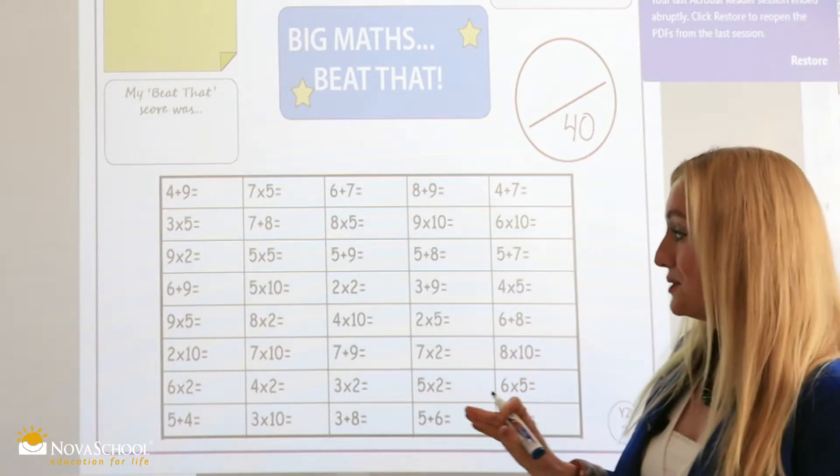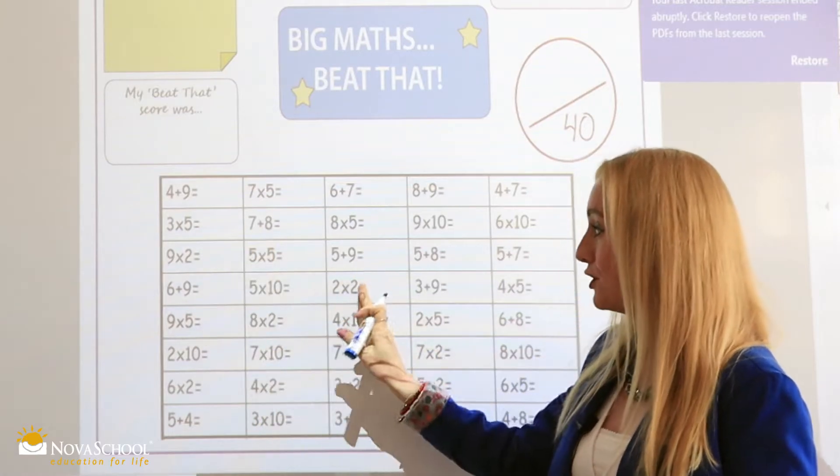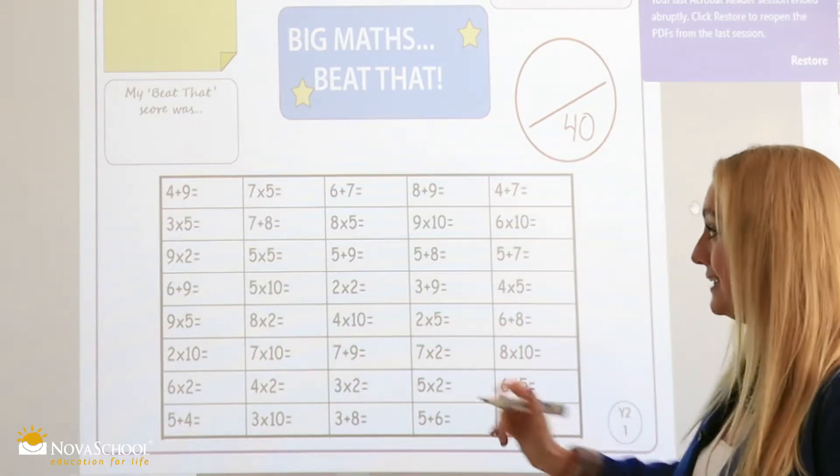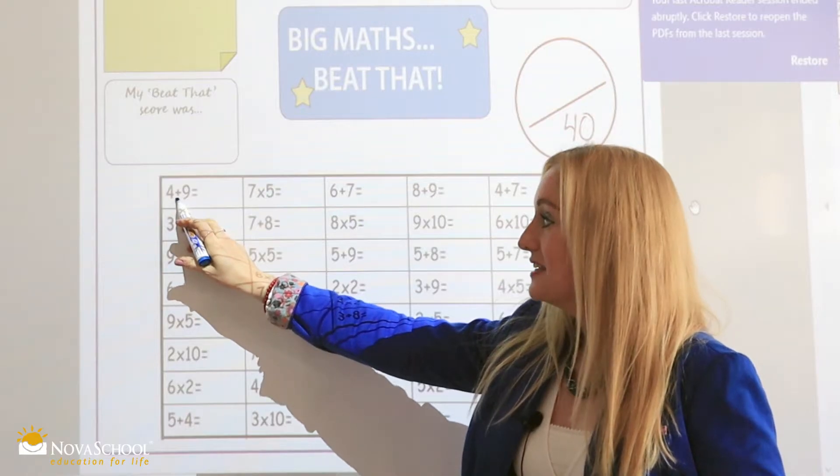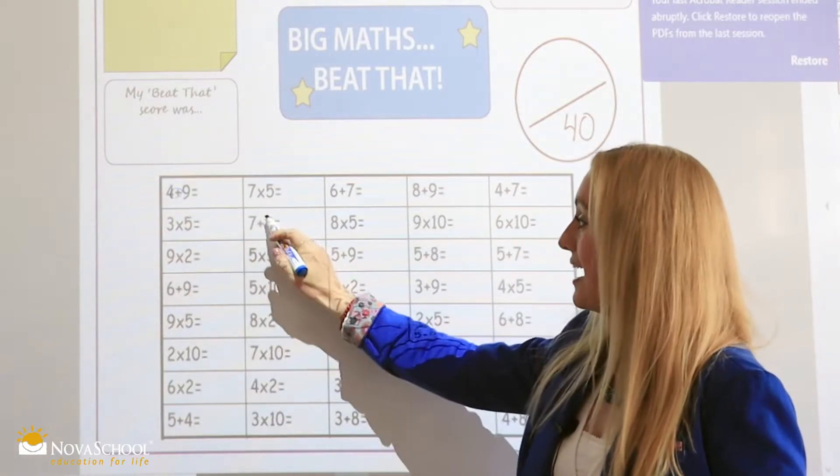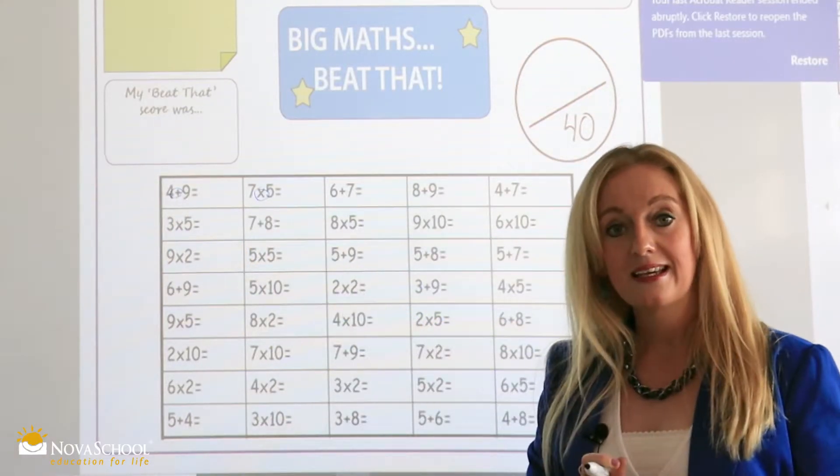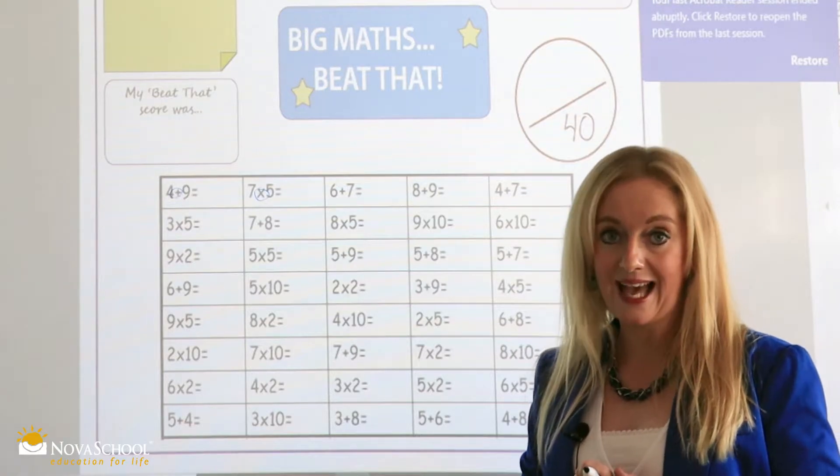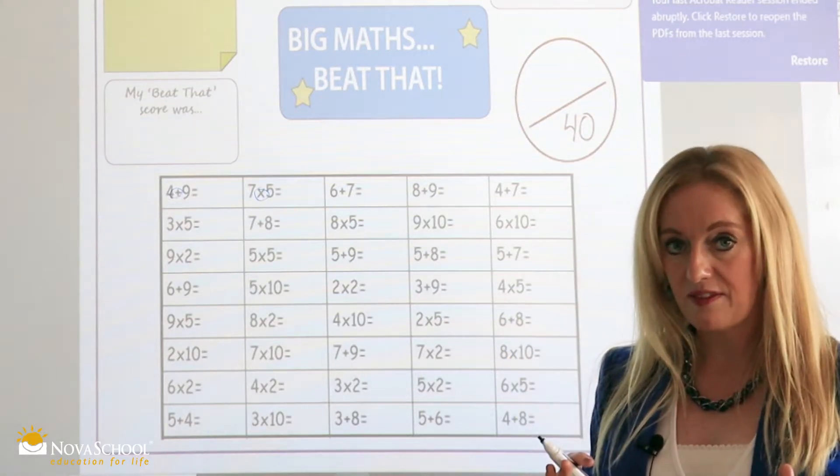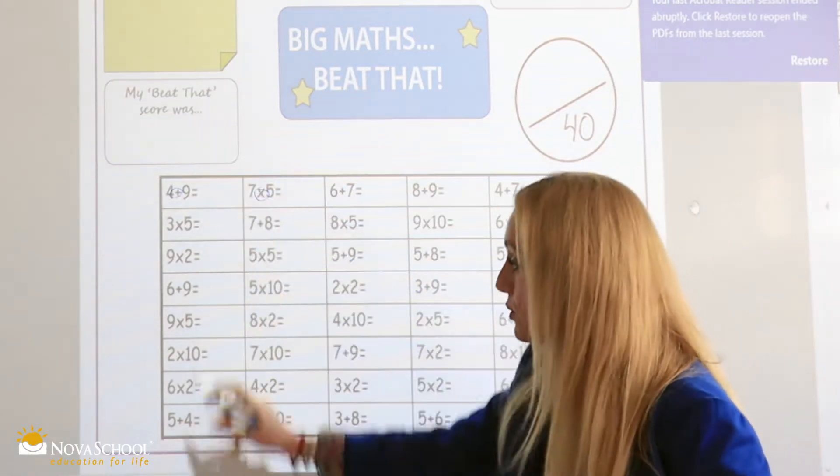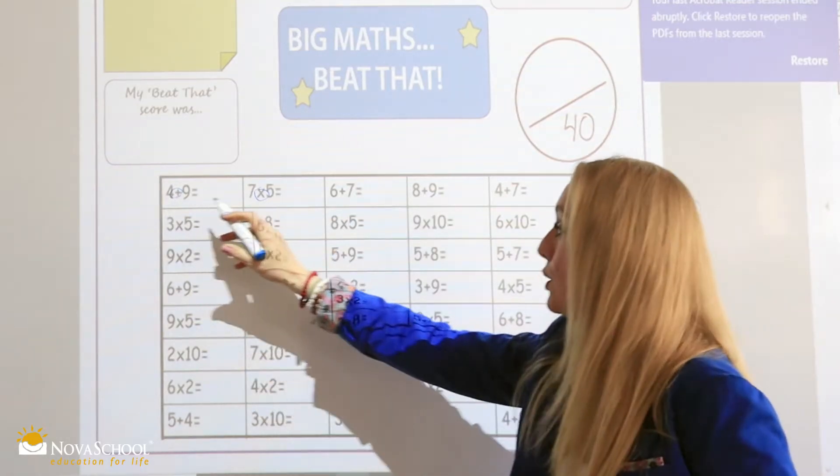Let's have a look. We need to look at the different columns that are available for our students here. We have additions and we have multiplications. There's many ways that we can tackle Big Maths. We can go down. We can go across.